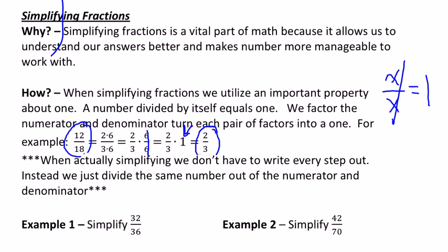For instance, with 12 and 18, we say what's 12 divided by 6? That's 2. What's 18 divided by 6? That's 3. So your goal is to find something that divides the numerator and denominator.